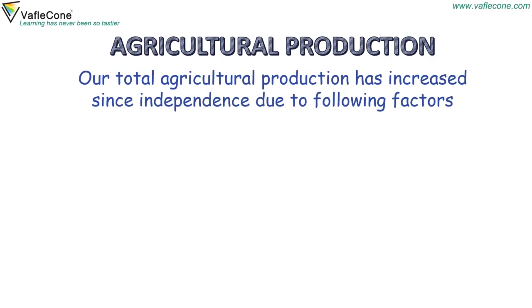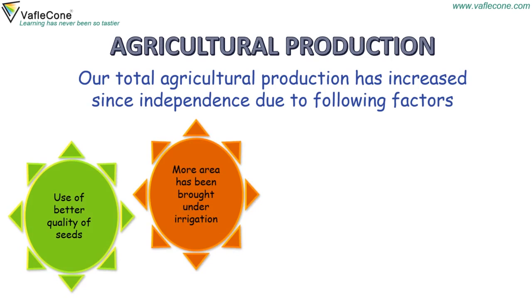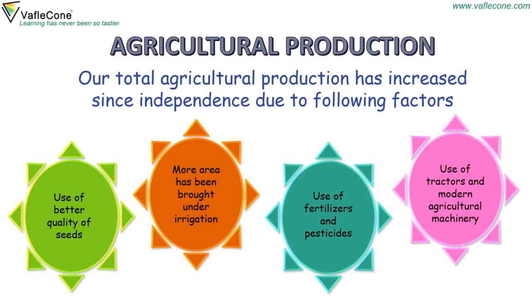Agricultural production. Our total agricultural production has increased since independence due to the following factors: use of better quality of seeds, more area has been brought under irrigation, use of fertilizers and pesticides, and use of tractors and modern agricultural machinery.